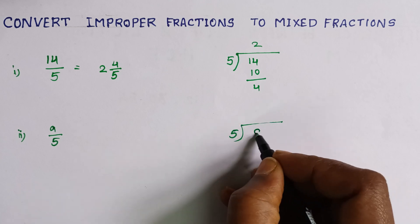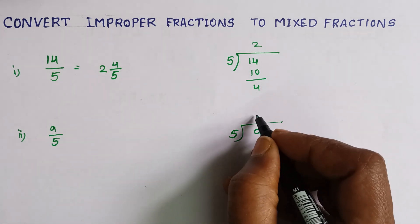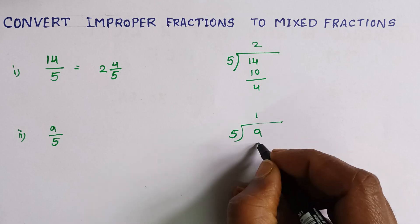9 divided by 5, how many times does it go? Only one time. So 5, and the remainder is 4.